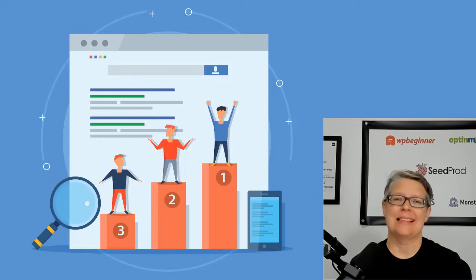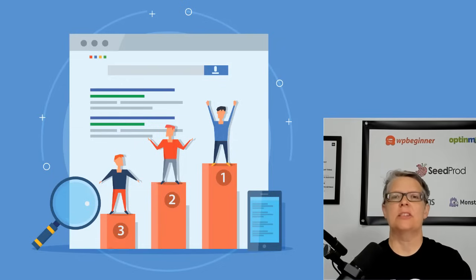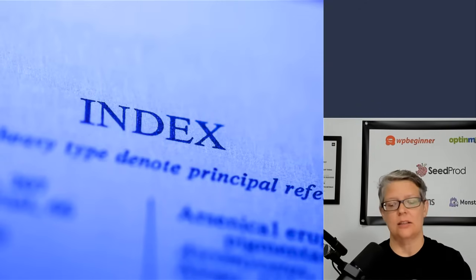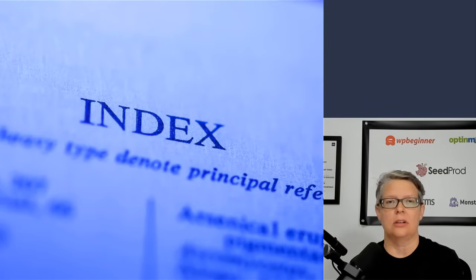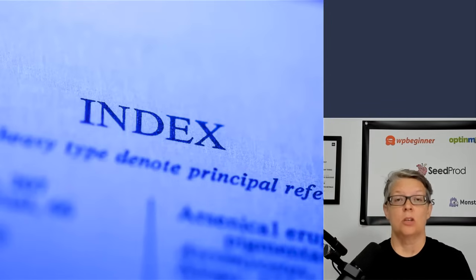Basically, search engines go out and scour the web to find pages and index them in their catalog. It's very similar to when you have a book and at the end there's an index that tells you where everything was discussed. That's pretty much how Google's indexing system works as well — on the web, in the cloud.